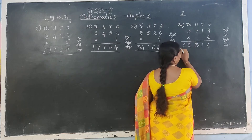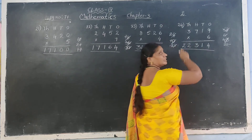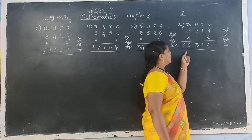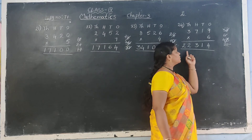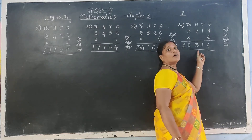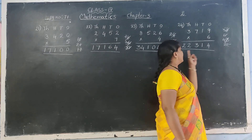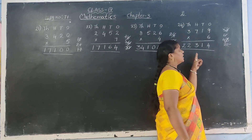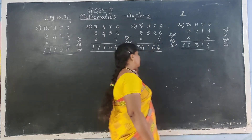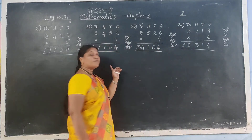Why write directly in answer? Next digit is not there. So here the product is 22,314.